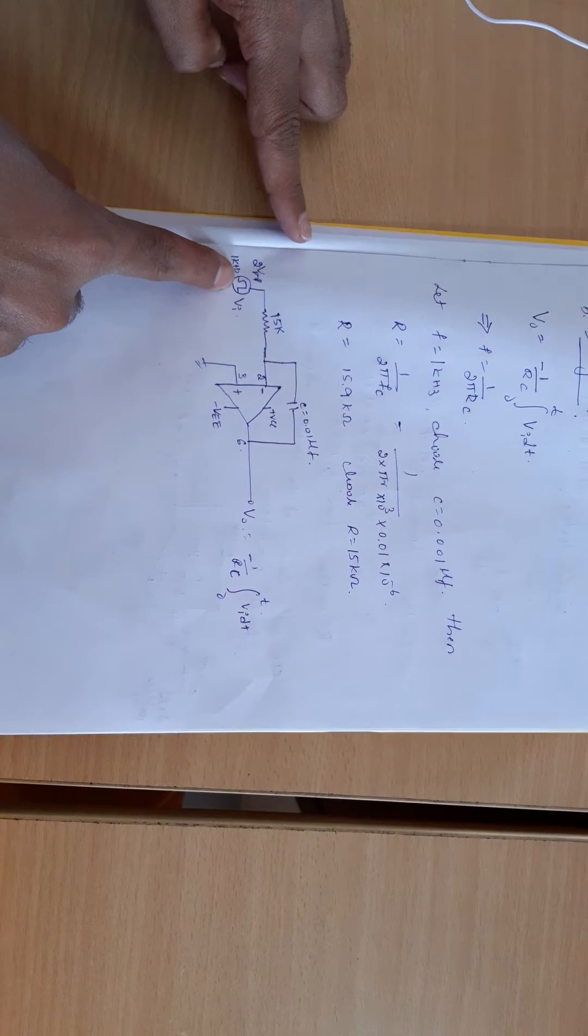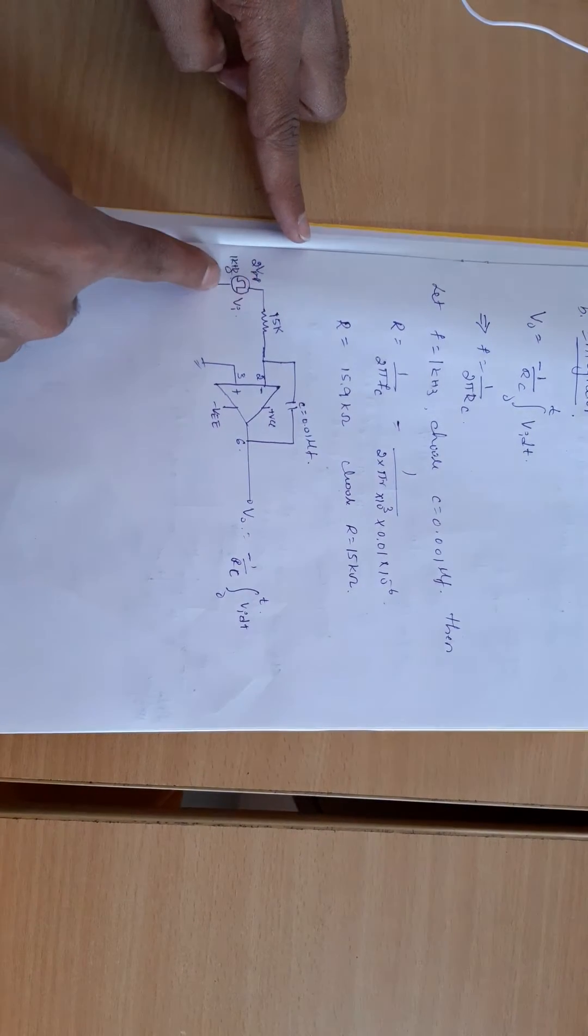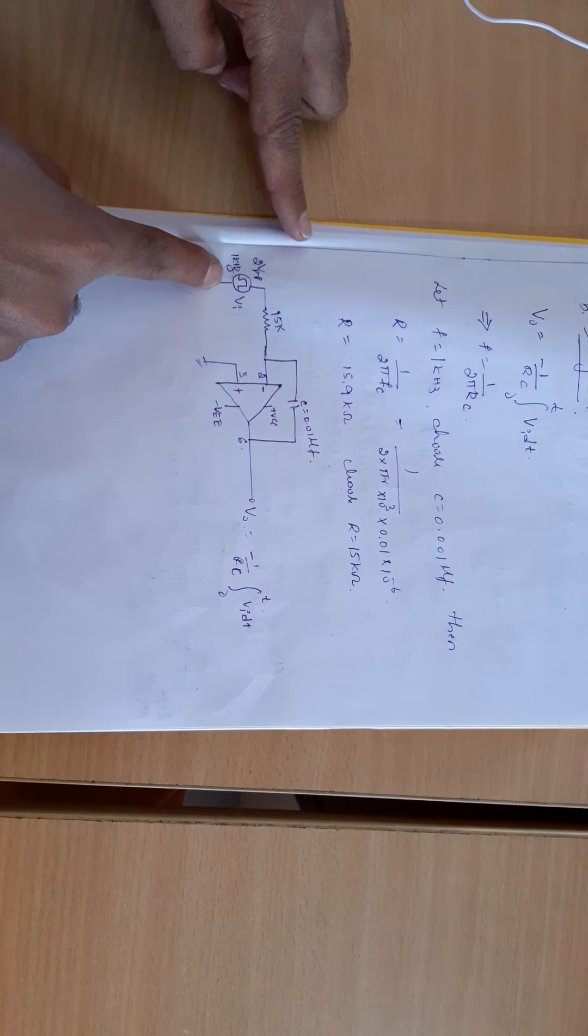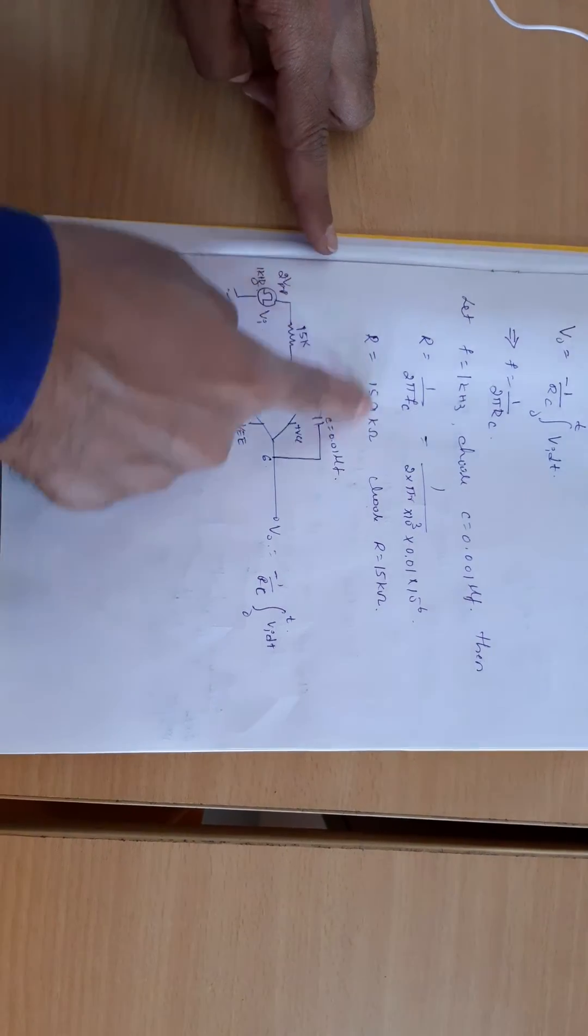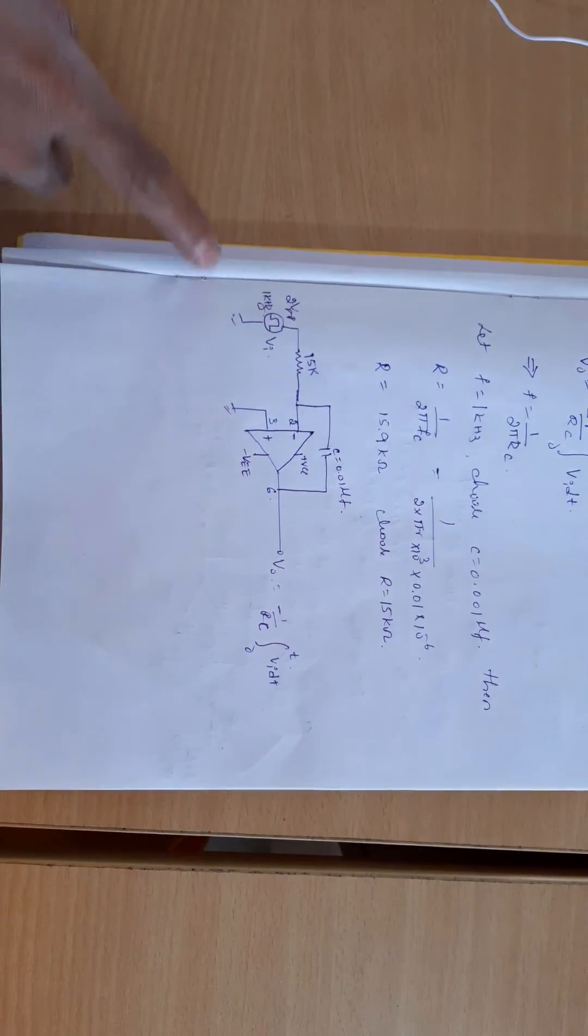The input is given from the signal generator, that is 2 volt peak to peak, 1 kilohertz signal. So for an input of square wave, the output should be triangular wave. In the same manner we have connected the circuit diagram here.